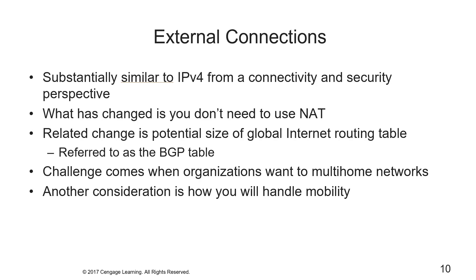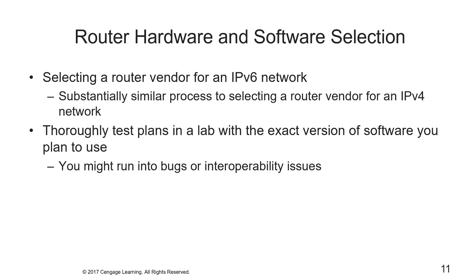External connections are substantially similar to v4 from a connectivity and security perspective — the key change is that you don't need NAT. A related change is the potential size of the global internet routing table, the BGP table. The challenge comes when organizations want to multi-home their networks; when you multi-home, you may need to apply for your own address space directly from the regional authority. Another consideration is mobility — in v6, mobility is the ability to move from one network to another while retaining an IP address for ongoing sessions.